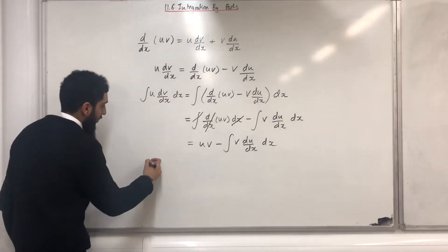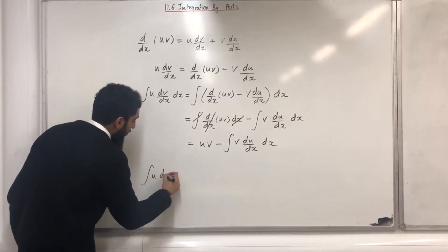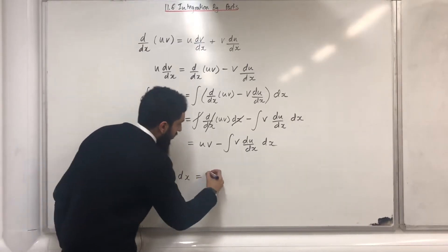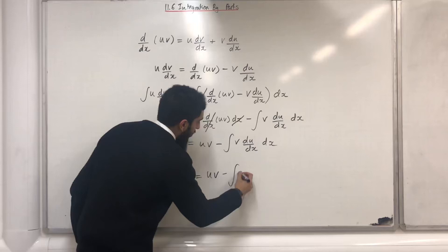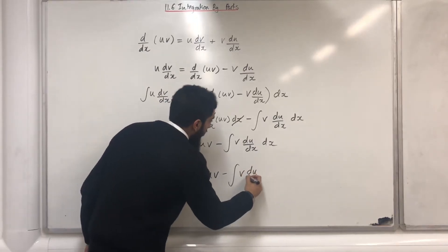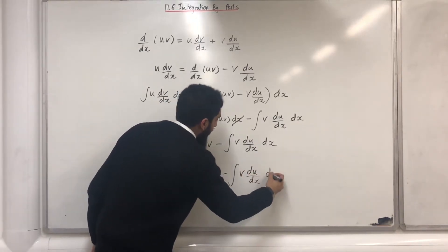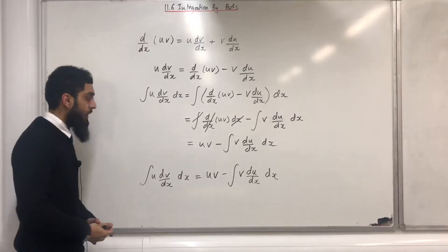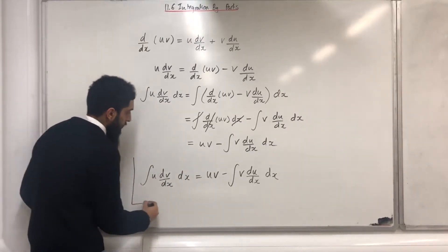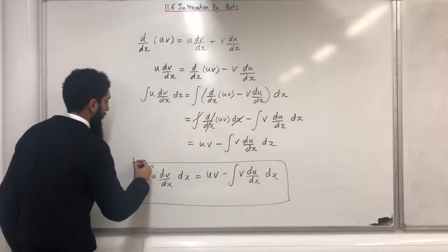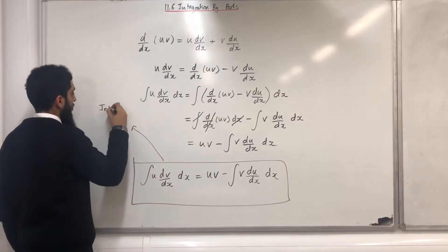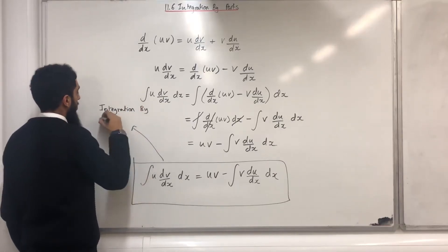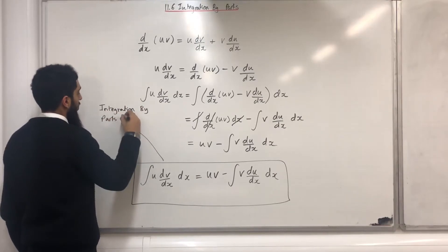Therefore I can now write the integral of u dv/dx dx equals uv minus the integral of v du/dx dx. And this here is the integration by parts formula.